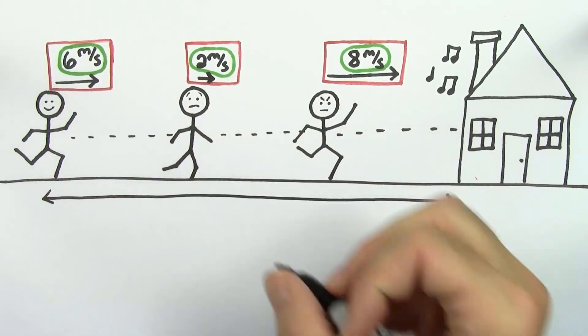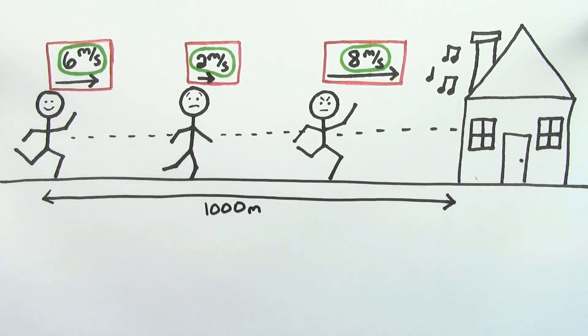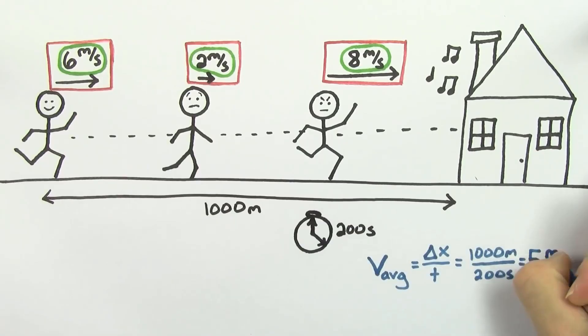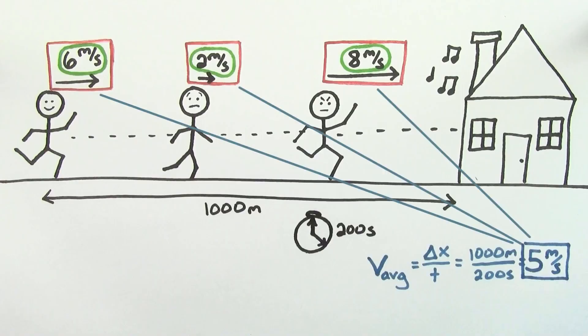Note that this is different from the average velocity. If your home was a thousand meters away from school, and it took you a total of 200 seconds to get there, your average velocity would be 5 meters per second, which doesn't necessarily equal the instantaneous velocities at particular points on your trip.